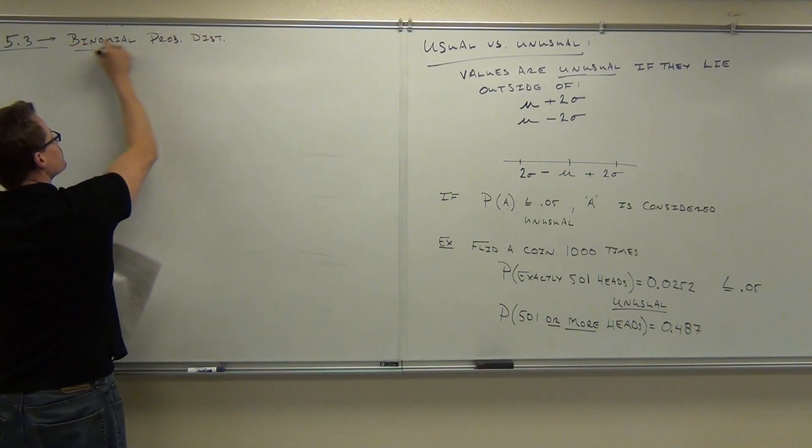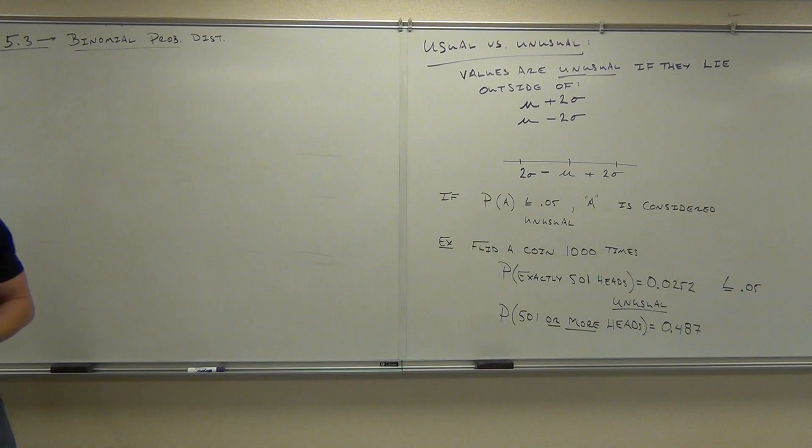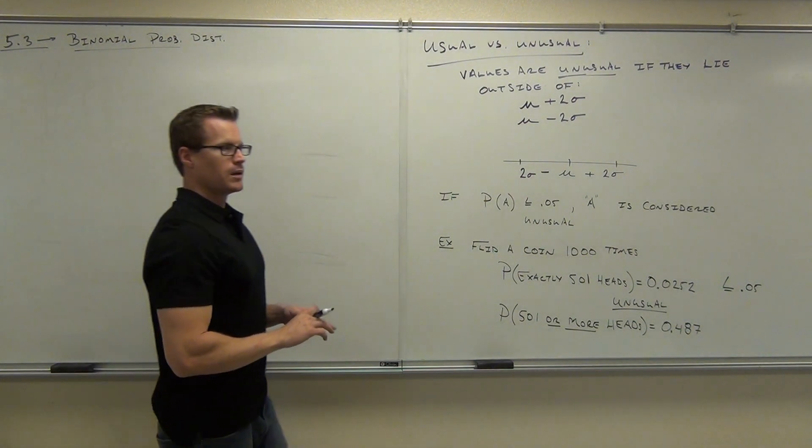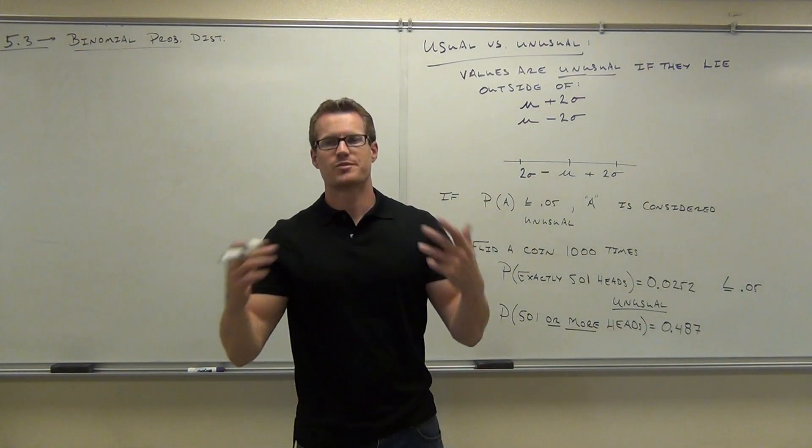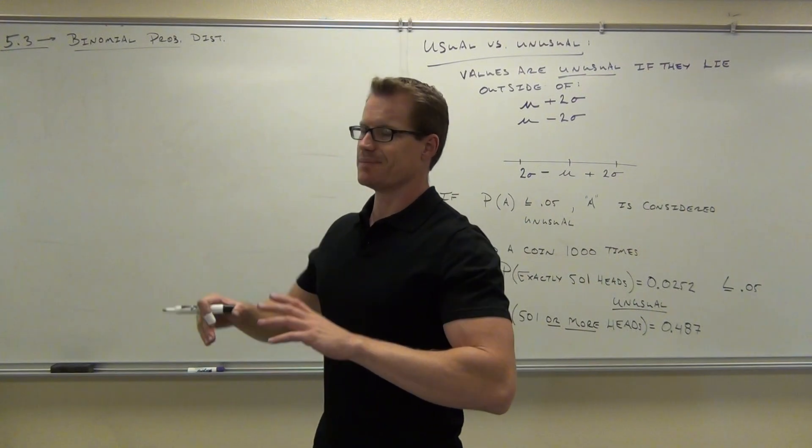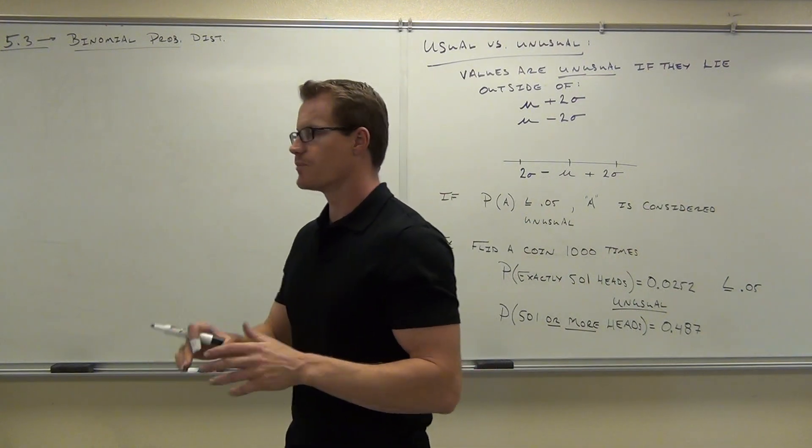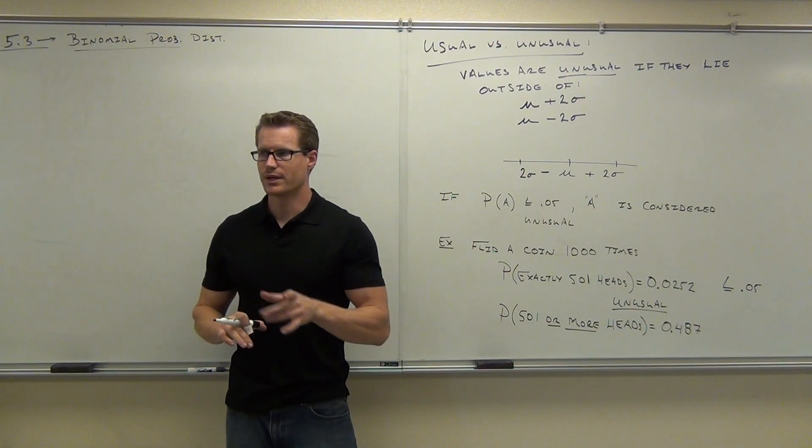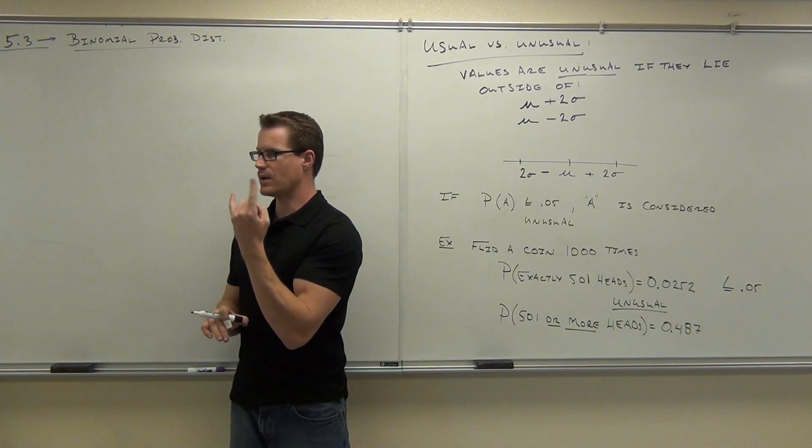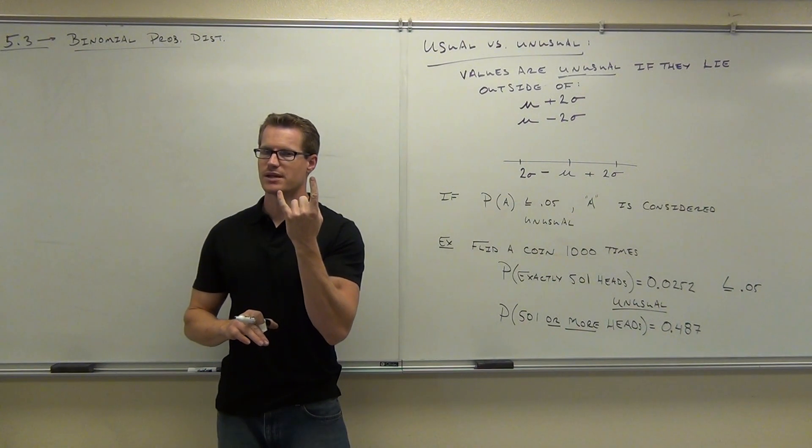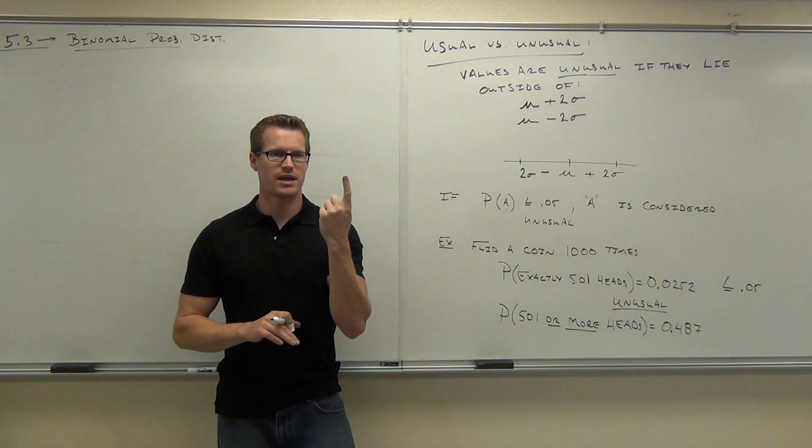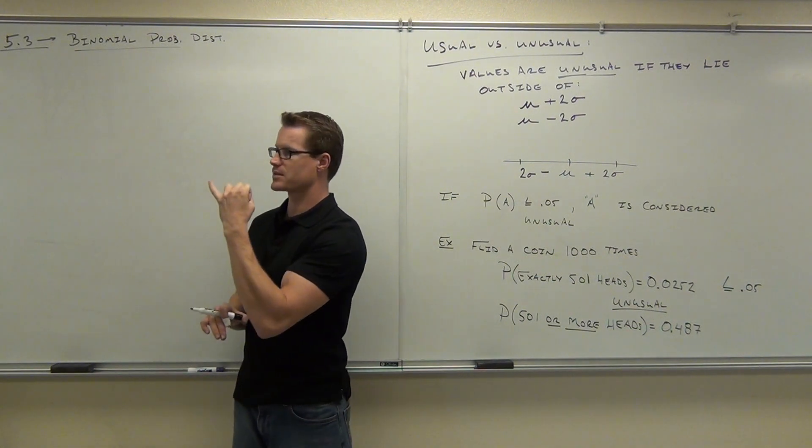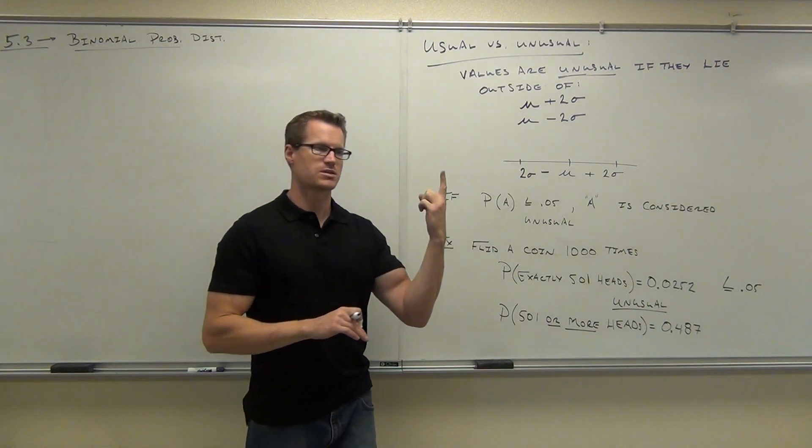Binomial probability distribution. In this case, bi means two, nomial means name, term, or outcome. For us it means outcome. What this is, is a probability distribution where there are only two outcomes - something considered a success and something considered a failure.